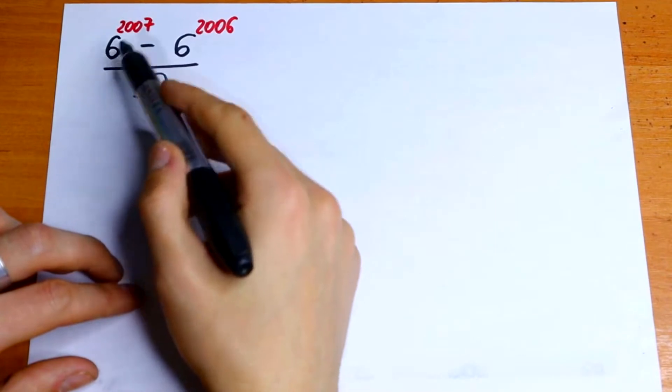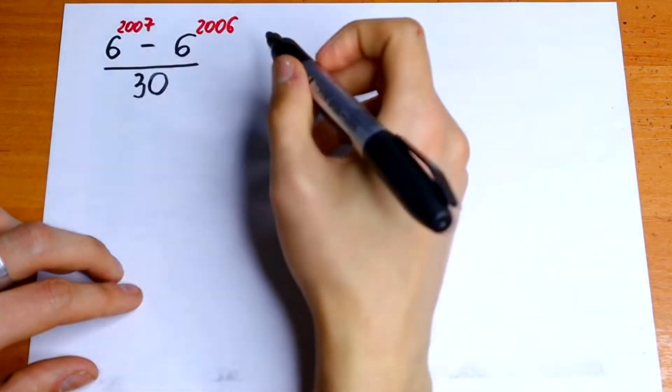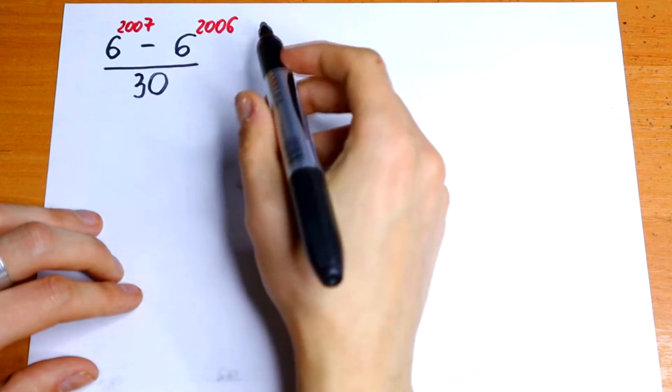We have right here a huge number because we have 6 to the 2007 power and right here to the 2006 power as well.